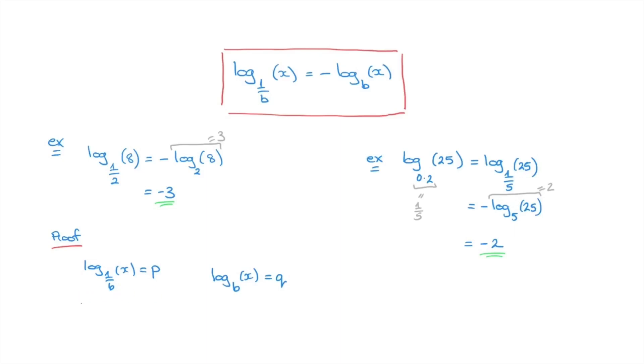Here, we can rewrite this as 1 over b raised to the power of p equals x. And since 1 over b equals b to the power of negative 1, we can write this as b to the power of negative 1 raised to the power of p equals x. In other words, b to the power of negative p equals x. And I'll just go ahead and box that first result.